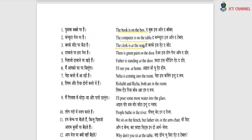We cannot say the clerk sits on the seat in the same way. Consider: 'This is green paint on the door' — the paint is on the door. But 'Father is standing at the door' — we use 'at,' not 'on.' If someone is on top of a door physically, that's different from standing at the doorway.